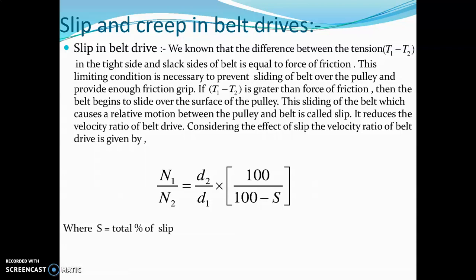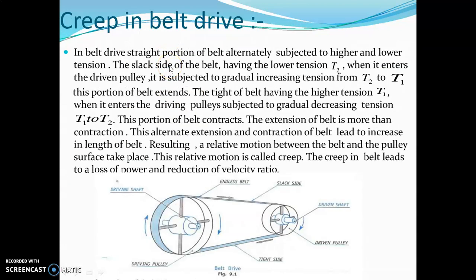The slip reduces the velocity ratio of the belt drive. Now the next condition is creep. In a belt drive, the straight portion of the belt is alternately subjected to higher and lower tension. The slack side of the belt has lower tension T₂. When it enters the driving pulley, it is subjected to gradually increasing tension T₁.